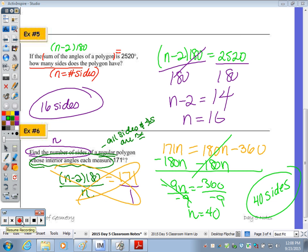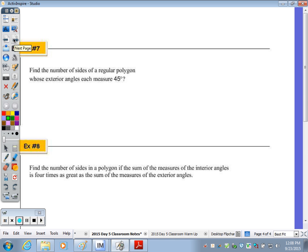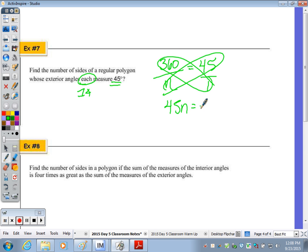Moving to the back, example number 7. Find the number of sides of a regular polygon whose exterior angles each measure 45 degrees. To find each, I know it told me what one of them was, but to get just one, we divide 360 by n. We get 45 over 1. Cross multiply. 45n is equal to 360. Divide by 45 and n equals 8.